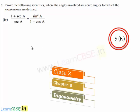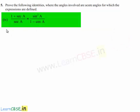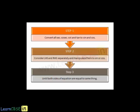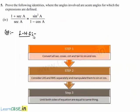Moving on to the fourth bit of the fifth question. He has given an equality: (1 + sec a) / sec a = sin² a / (1 - cos a). He asked us to prove the equality, so let us consider and simplify both the left hand side and the right hand side.